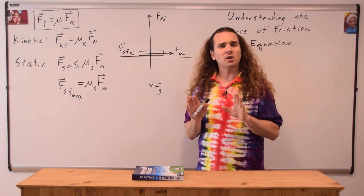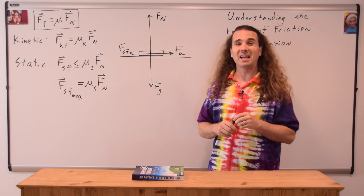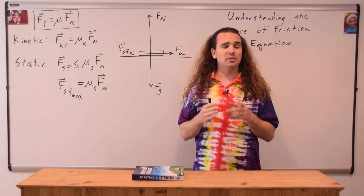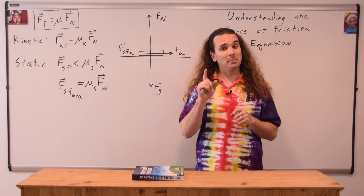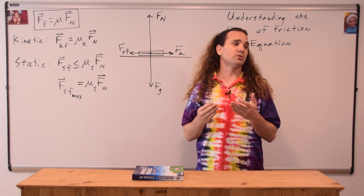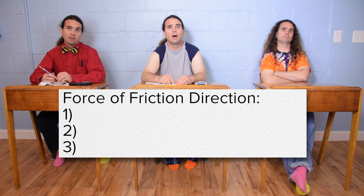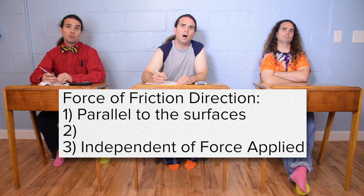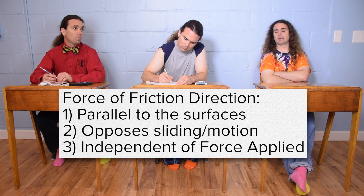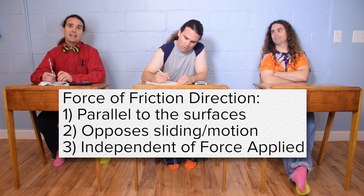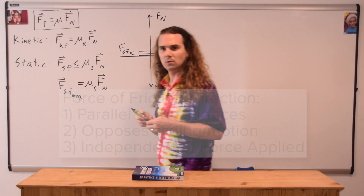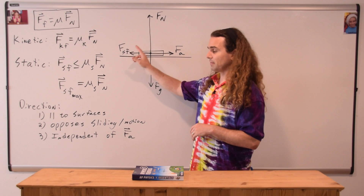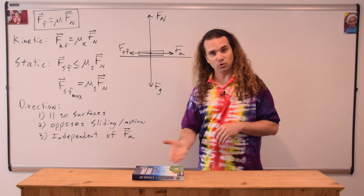Let's talk briefly about the direction of the force of static friction in this free body diagram. Billy recalls the three things to remember about the direction of friction: the force of friction is always parallel to the surfaces, is independent of the direction of the force applied, and opposes sliding or motion. Clearly, the force of static friction here is parallel to the table.